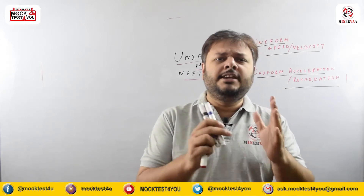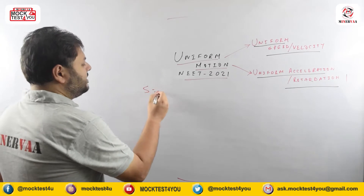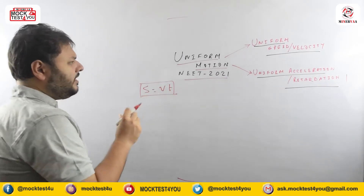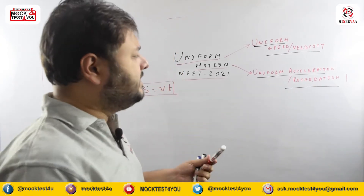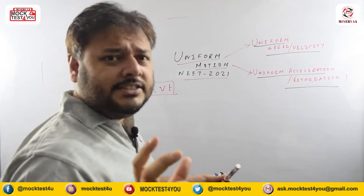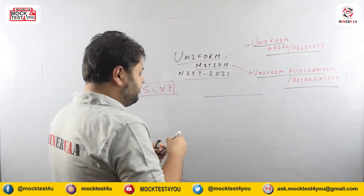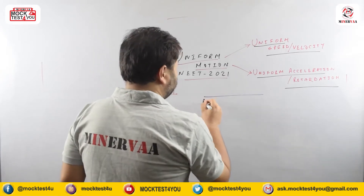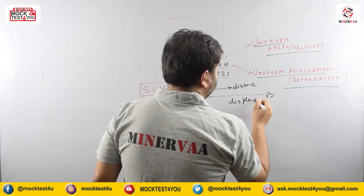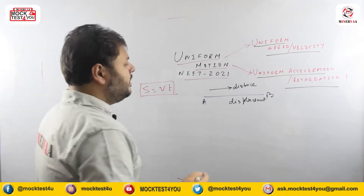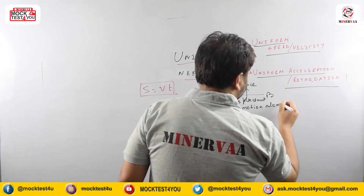We want to specify that uniform motion is not just s equals vt — distance equals speed into time is the main fundamental principle, but here we will discuss all kinds of uniformity: uniform acceleration, uniform retardation, and all such things. When a particle moves along a straight line, its speed and velocity are the same, and distance equals displacement.